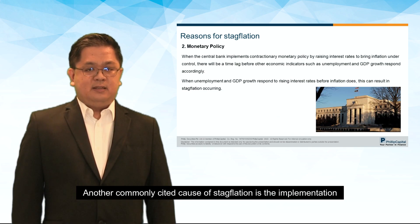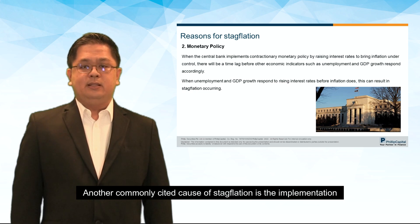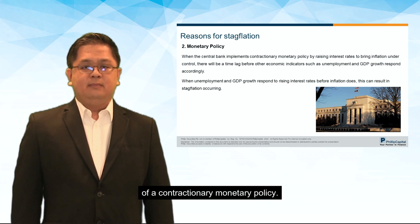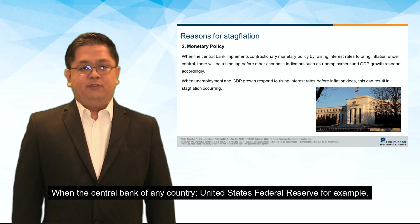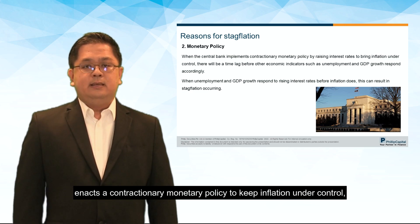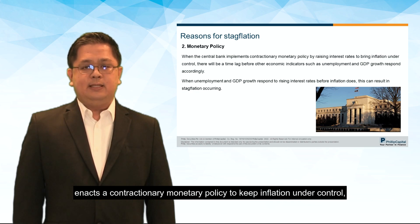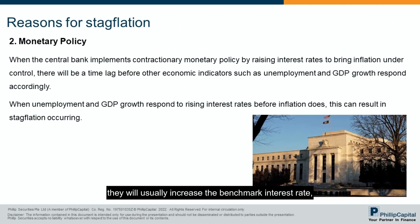Another commonly cited cause of stagflation is the implementation of a contractionary monetary policy. When the central bank of any country — the United States Federal Reserve, for example — enacts a contractionary monetary policy to keep inflation under control, they will usually increase the benchmark interest rate, such as the federal funds rate.